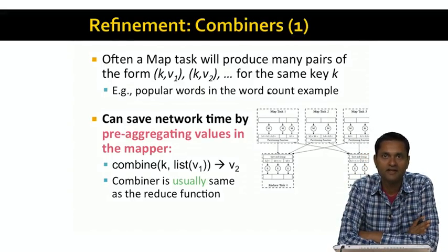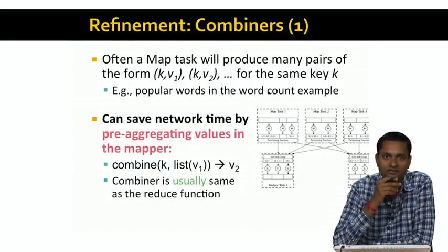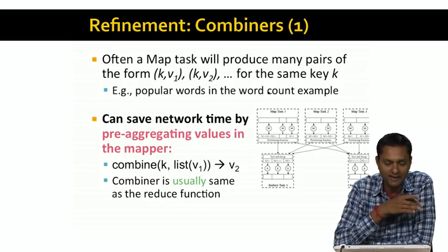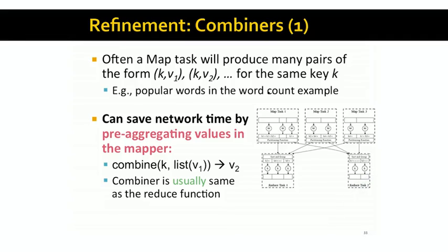The first refinement we're going to look at is combiners. One of the things you may have noticed in the previous examples is that a map task will produce many key-value pairs with the same key. For example, a popular word like 'the' will occur in millions of key-value pairs. The map tasks are happening in parallel on multiple worker nodes, and the key-value pairs from each map node have to be shipped to reducer nodes. Map task one is probably going to see a few thousand occurrences of the word 'the', and map task two is going to see a few thousand occurrences of the word 'the', and so on.